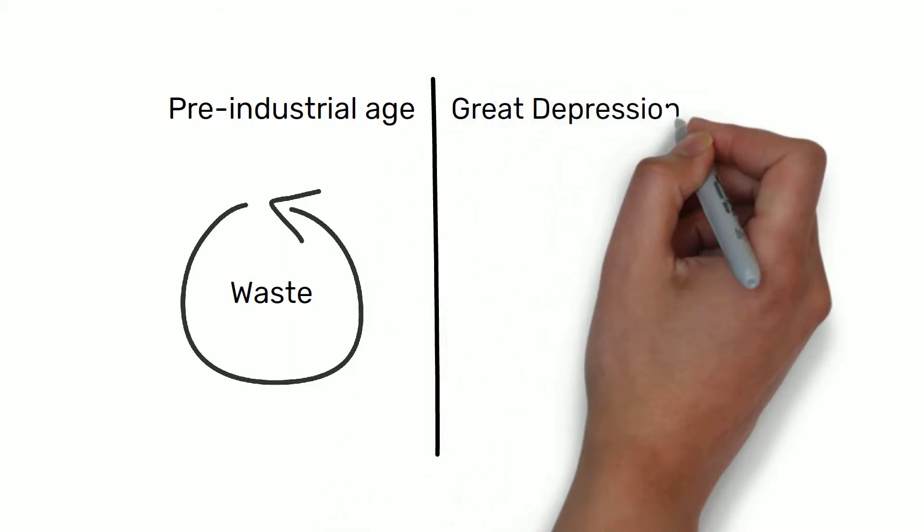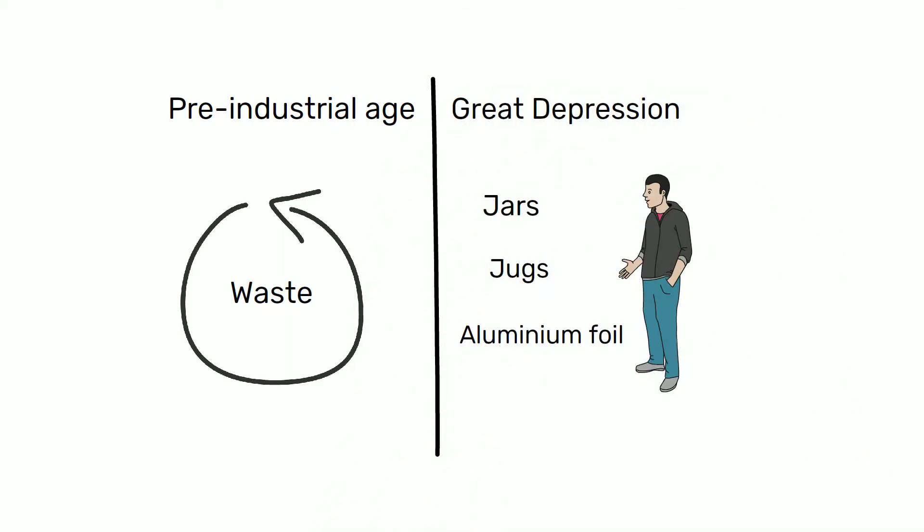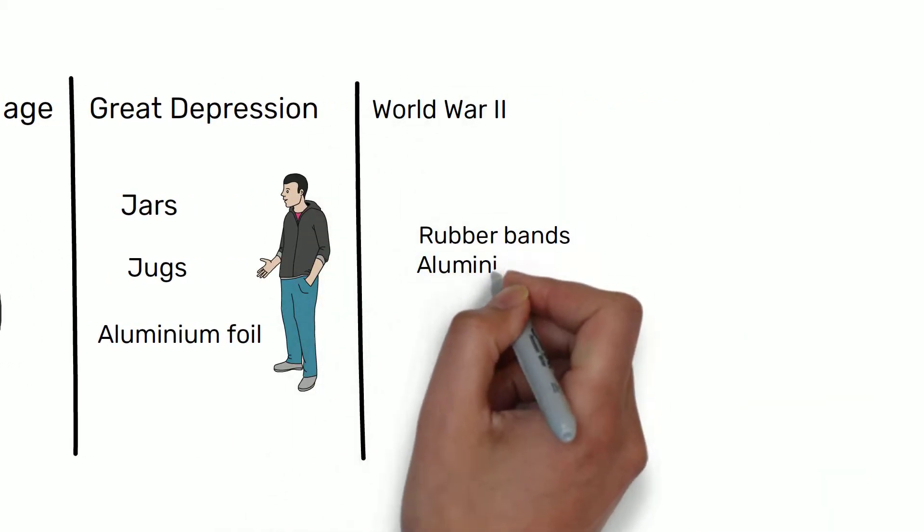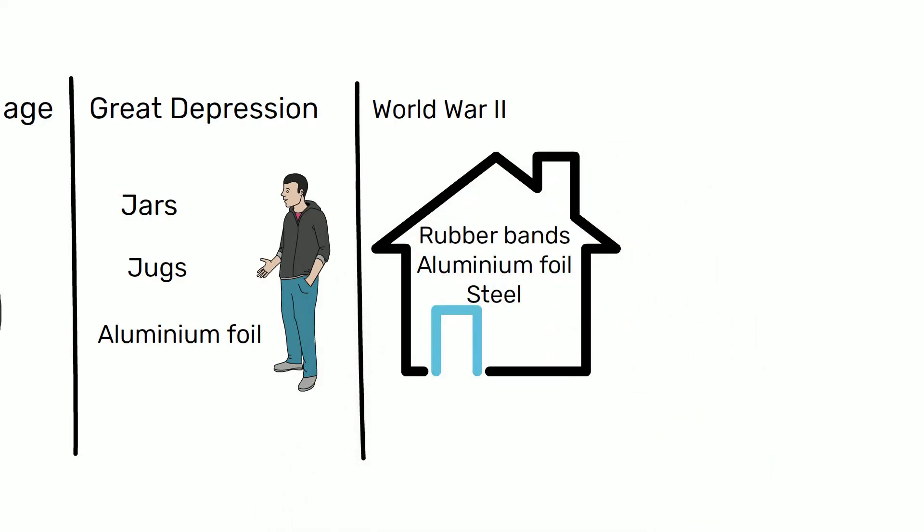Then came the Great Depression, where people were careful about reusing jars, jugs, foils. And during World War II, people saved rubber bands, aluminum foil, steel and other materials to feed industrial needs.